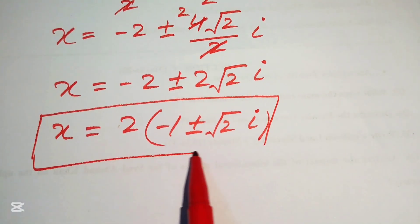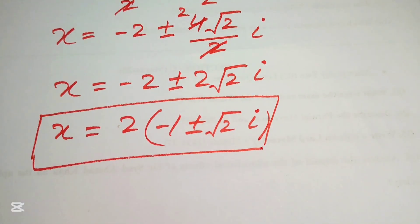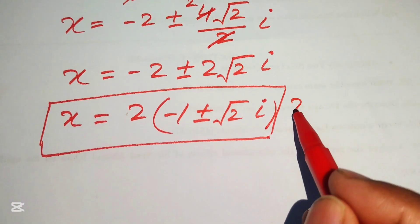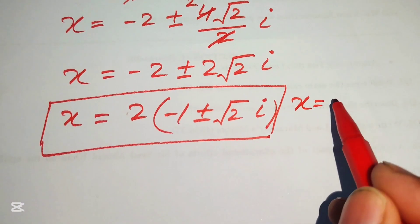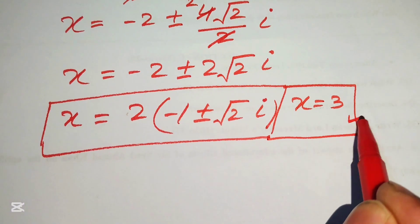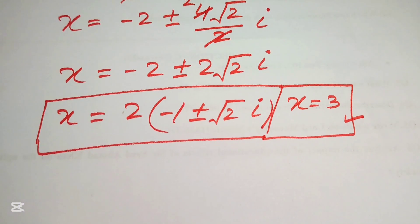These are the two complex roots of the equation. Since the original equation is cubic, it has three roots in total: one real root, x equals 3, and two complex roots. This is the final answer. Thank you for watching — please subscribe to my channel for more videos.